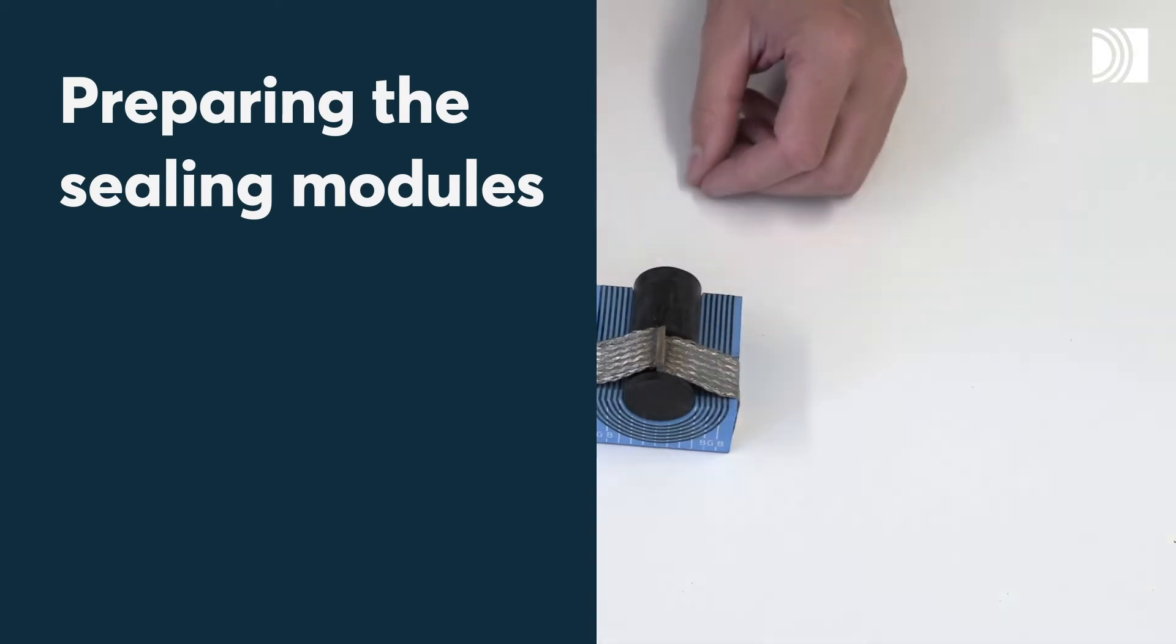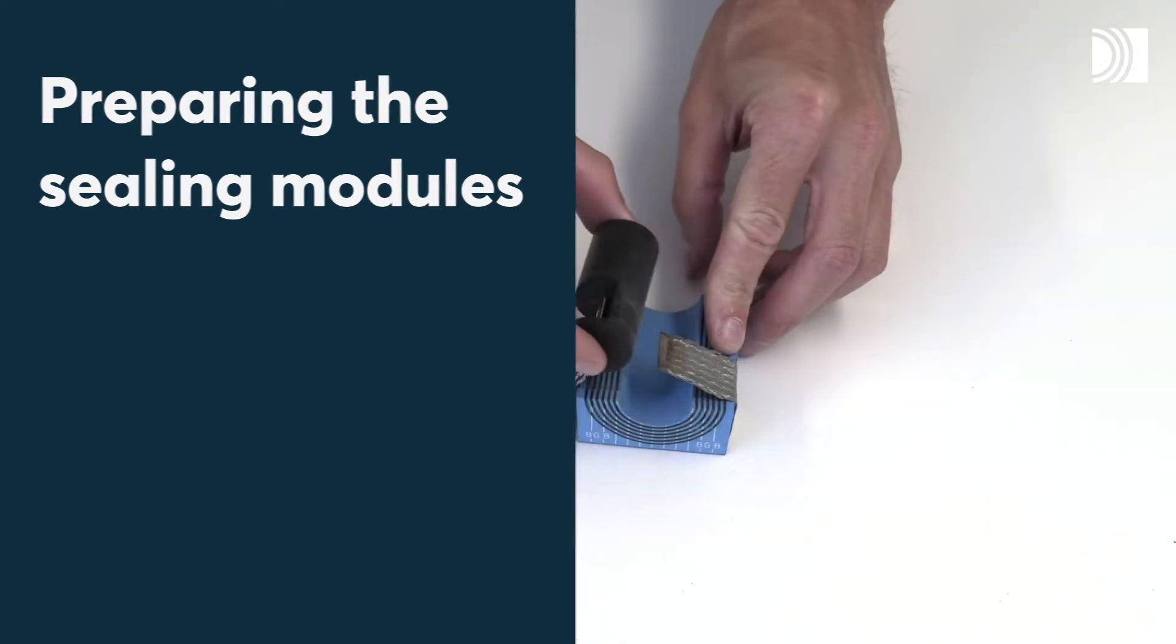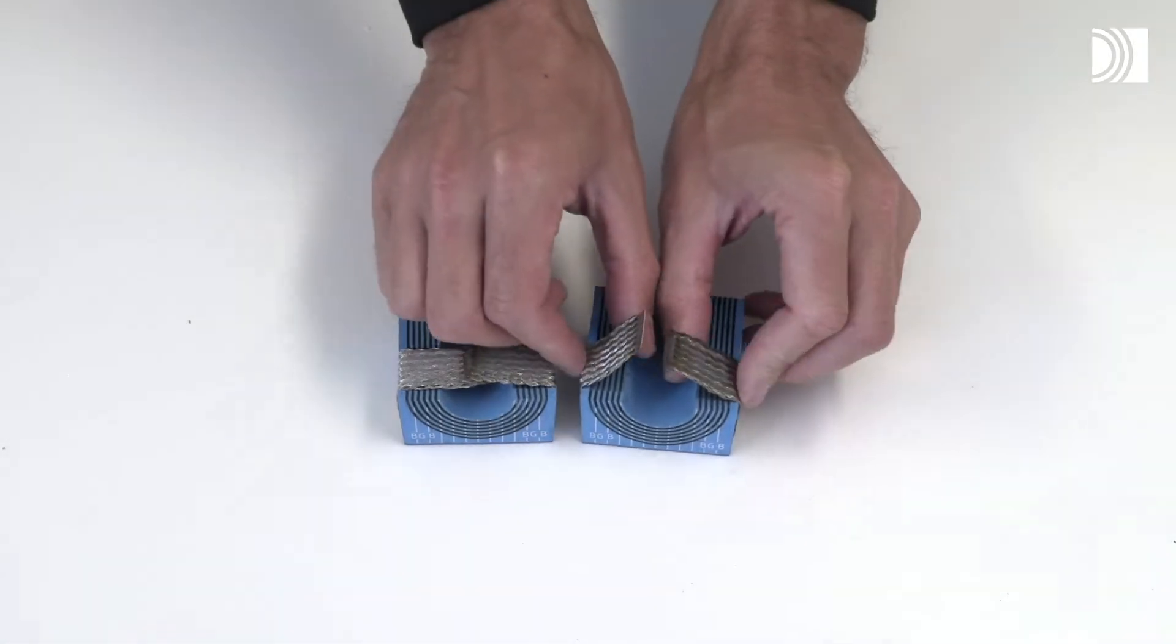Preparing the ceiling modules. Remove the core and fold out the braid on the modules that are to hold cables.